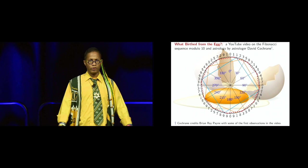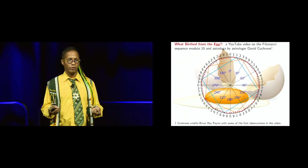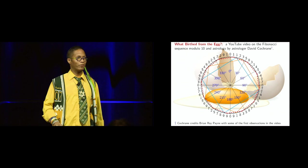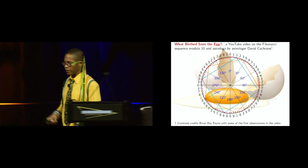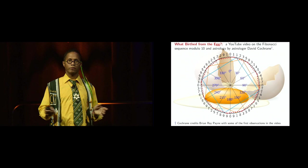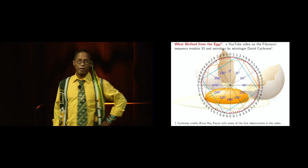What birthed it from this egg? Well, the following birthed. I saw a YouTube video, a 30-minute video, by a gentleman named David Cochran, and he talked about the Fibonacci Sequence Modulo 10 and a connection to astrology. Nobody ran out the room yet. Okay, good. I want to say that he credits a gentleman named Brian Ray Payne for some of the observations that they made. Neither of these gentlemen are mathematicians by any means. And Brian Ray Payne also is not an astrologer, but David Cochran is.